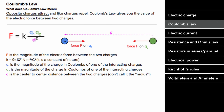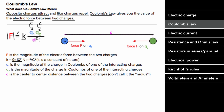Opposite charges attract and like charges repel. Coulomb's Law gives you a way to find the magnitude of the electric force between two charges. The formula says the magnitude of the electric force between two charges Q1 and Q2 equals the electric constant K — which is 9 times 10 to the ninth — times the product of the two charges in Coulombs, divided by the center-to-center distance squared. Don't forget to square the distance, and it must be in meters to get SI units of Newtons. Don't rely on the signs of the charges to determine direction — use the fact that opposite charges attract and like charges repel.